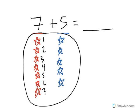1, 2, 3, 4, 5, 6, 7, 8, 9, 10, 11, 12. There are a total of 12 stars, which means that 7 plus 5 equals 12.